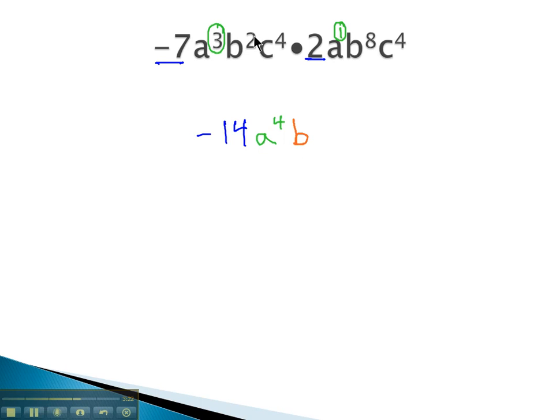On the b's, we add the exponents. 2 plus 8 is 10, b to the 10th. And finally, on the c's, 4 plus 4 is 8.